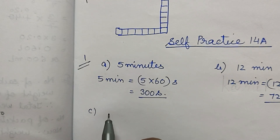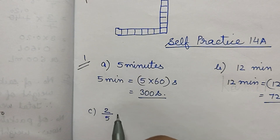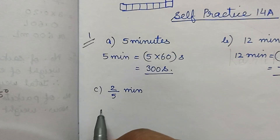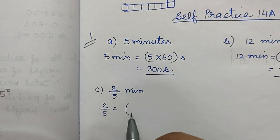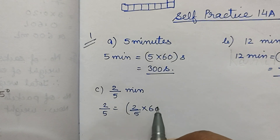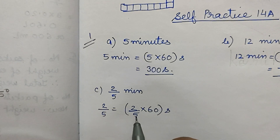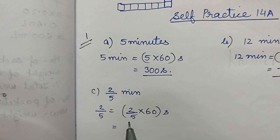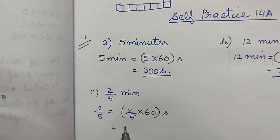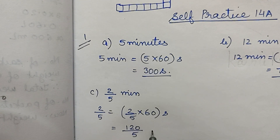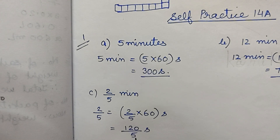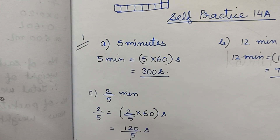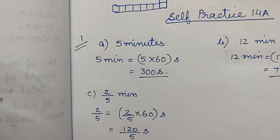Part c: 2/5 minutes. So 2/5 minutes is equal to 2/5 into 60 seconds. We multiply and then reduce — 2 times 60 gives 120, divided by 5 gives 24 seconds.